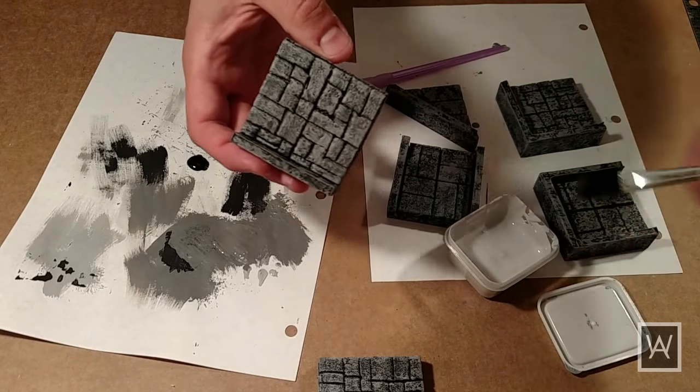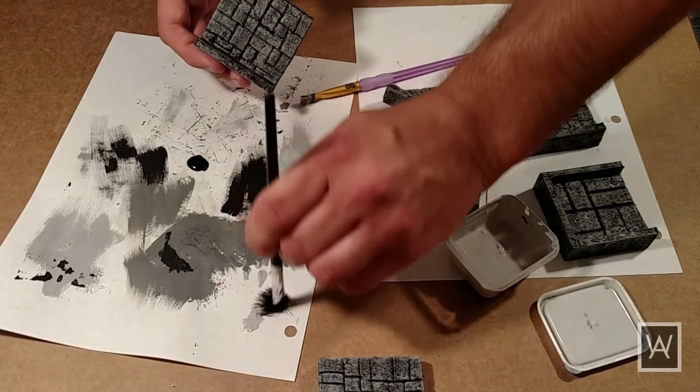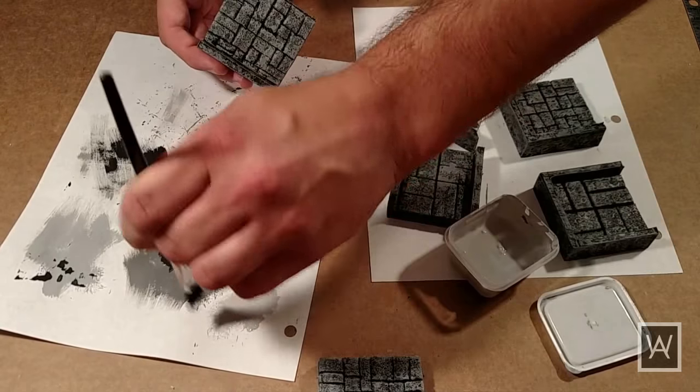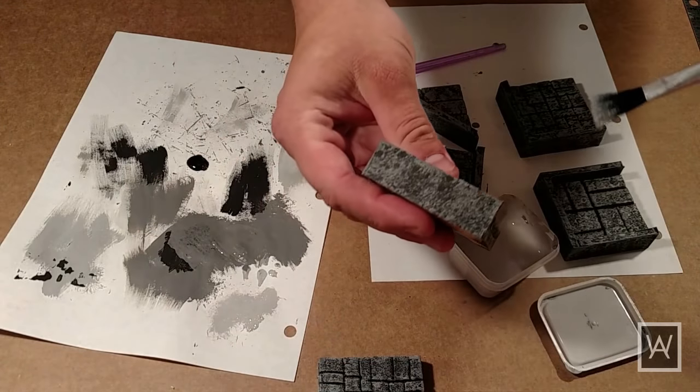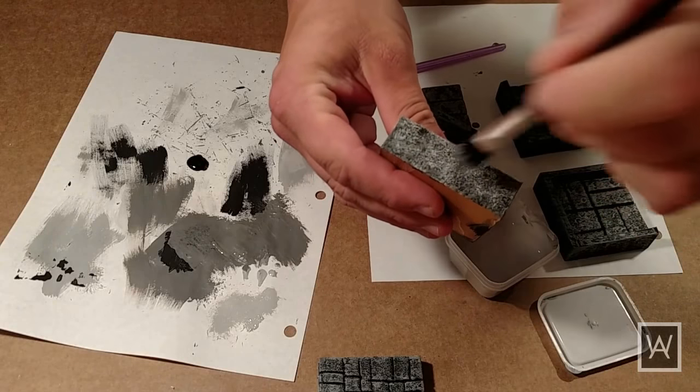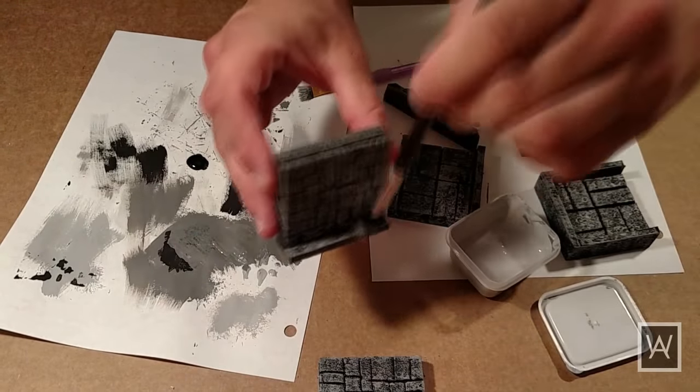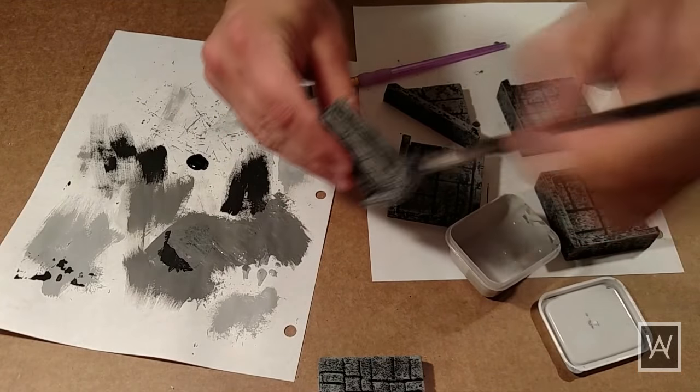For all other surfaces, do not dry brush, but rather stipple. I use a terrible, firm, coarse brush. Really jab at your palette to splay out the bristles. I like stippling over sponging here, because it gives a much finer speckle. More like granite, and less like rock.